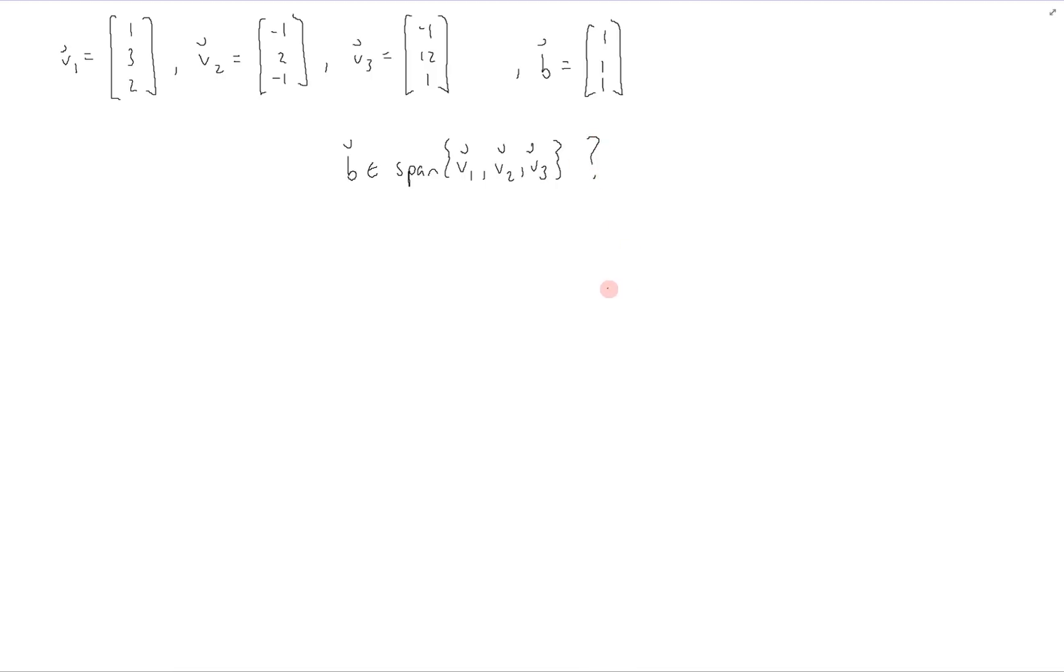So to find this, we can solve the equation Ax equals B. We want to see if we can form B out of a linear combination of the columns of A, which are going to be our vectors V1, V2, and V3.